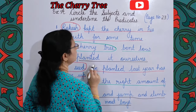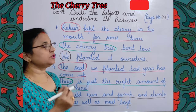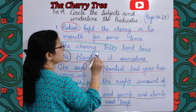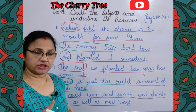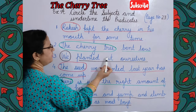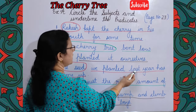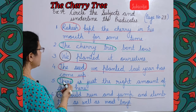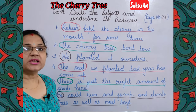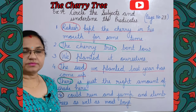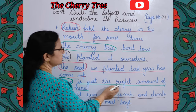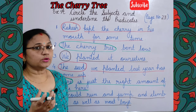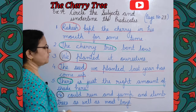Second: 'The cherry tree bent low.' Subject is 'the cherry tree'; predicate is 'bent low'. Third: 'We planted it ourselves.' Subject is 'we'; rest is predicate. Fourth: 'The seed we planted last year has come up.' Subject is 'the seed'. Fifth: 'There is just the right amount of shade there.' Subject is 'there'; rest is predicate. Sixth: 'He could run and jump and climb trees as well as most boys.' Subject is 'he'.